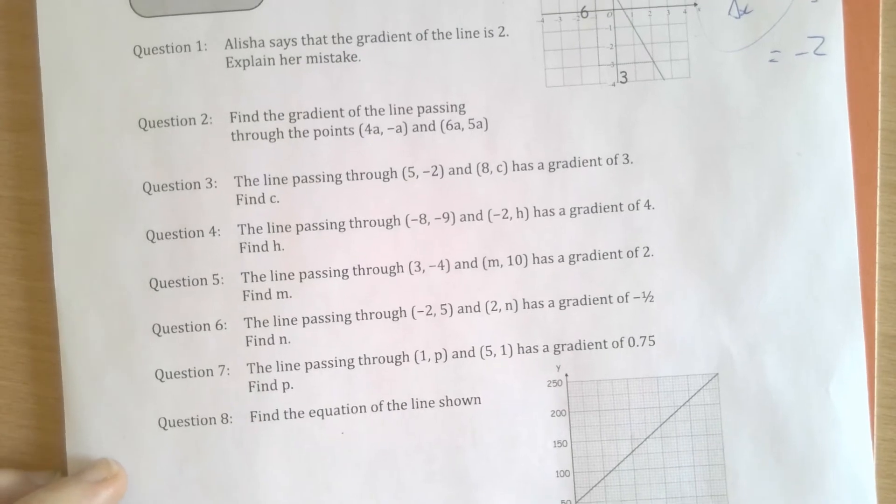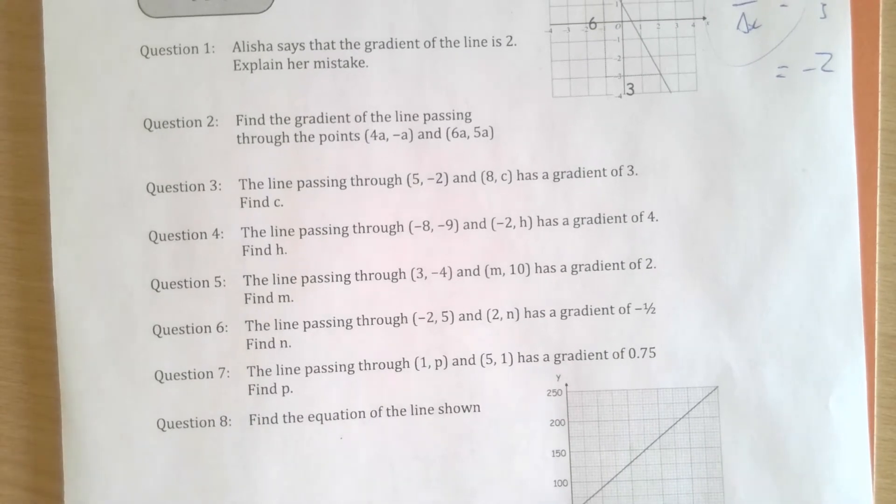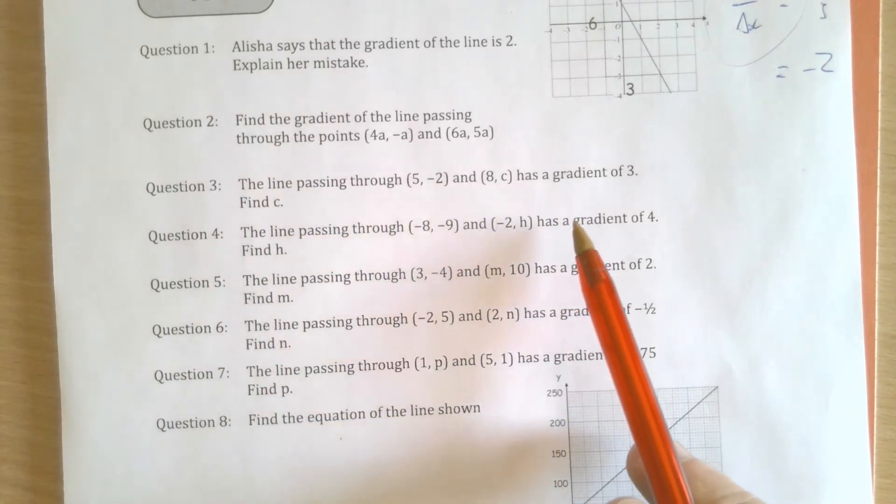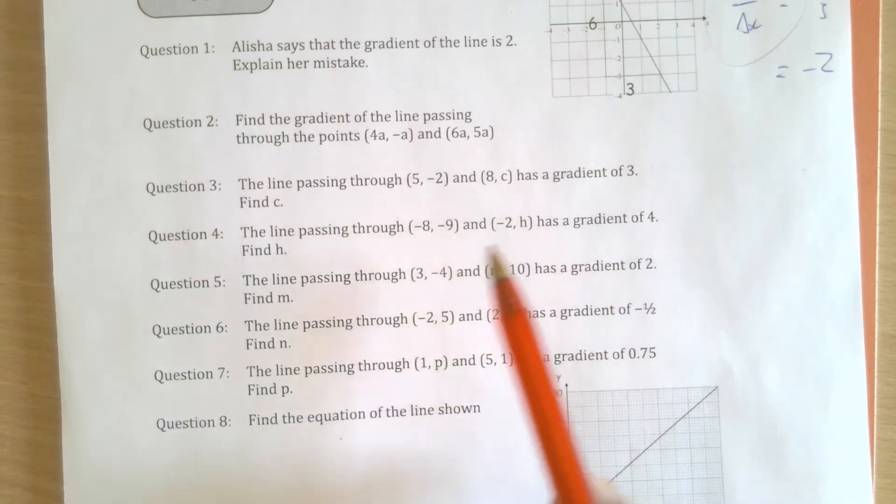Now, all of the other questions here, really, are the same idea. So, I'm going to give question 3 a go, and hopefully you'll feel empowered to do the rest of the exercise. The line passing through (5, -2) and (8, c) has a gradient of 3. Find c.